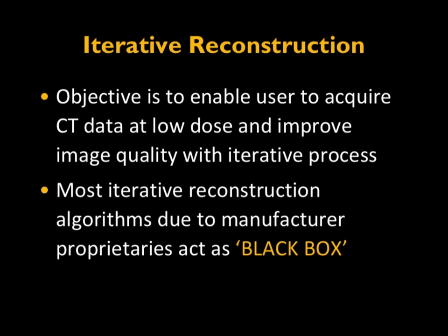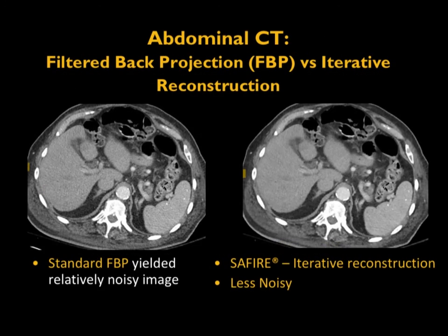Iterative reconstruction can be considered a black box, as most algorithms are manufacturer-proprietary. The overall principle is to enable users to acquire CT data at low dose while improving image quality through an iterative process. An example of an abdominal image reconstructed with standard filtered back projection versus iterative reconstruction shows improved image noise at a lower technique, resulting in a lower dose.